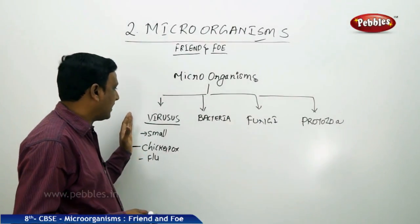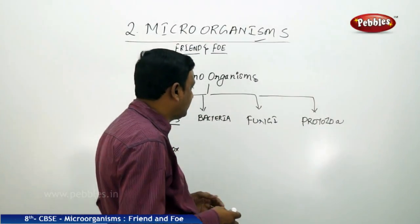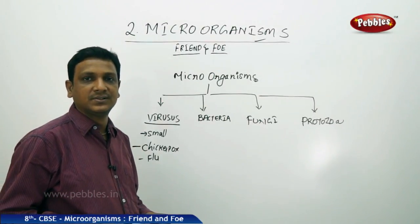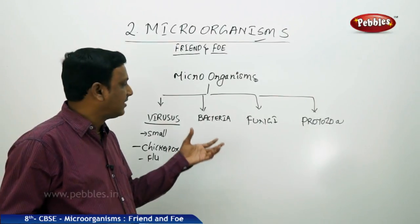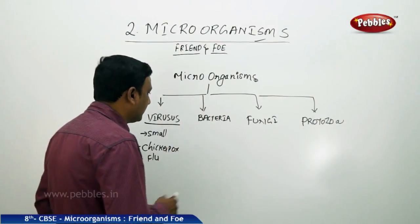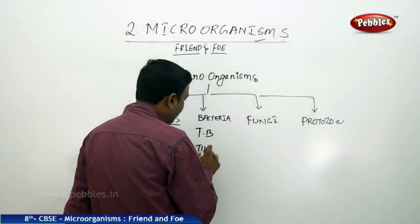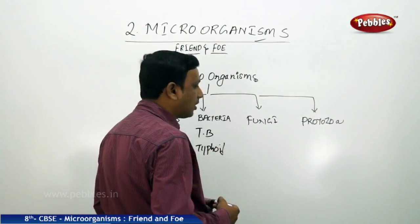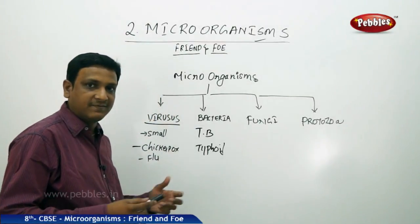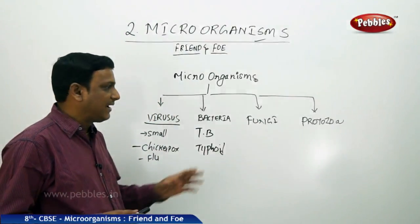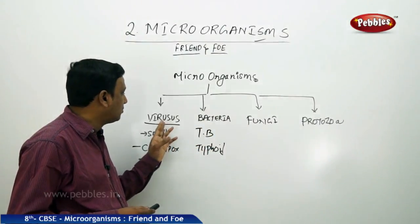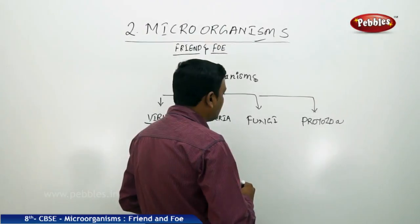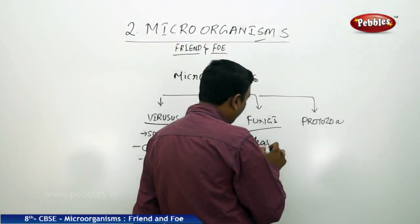Now let us go to bacteria. Bacteria also cause diseases like tuberculosis and typhoid. These diseases are caused by bacteria - TB and typhoid - and bacteria spread through water, by air, or by different insects. Bacteria are comparatively bigger compared to viruses.